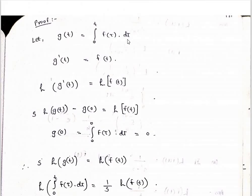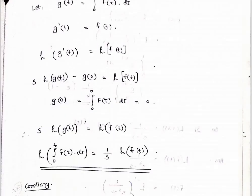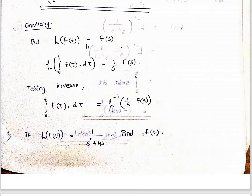Let g of t equal the integral from 0 to t of f of τ dτ. Then g dash of t equals f of t. So L of g dash of t equals L of f of t. By the derivative theorem: s times L of g of t minus g of 0 equals L of f of t. Since g of 0 equals 0, we get L of g of t equals (1/s) L of f of t. Corollary: L inverse of (1/s) F of s equals the integral from 0 to t of f of τ dτ.